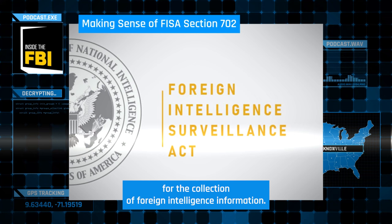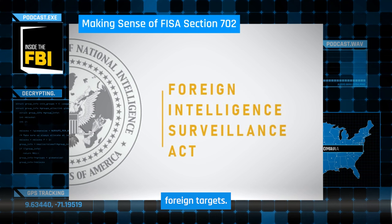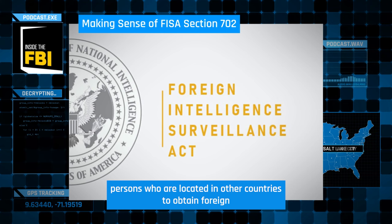I want to make clear: 702 does not let the FBI target Americans — only non-U.S. foreign targets. So we're collecting electronic communications about non-U.S. persons who are located in other countries to obtain foreign intelligence information.